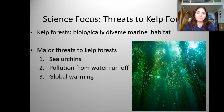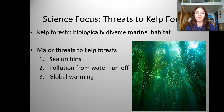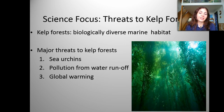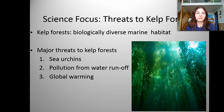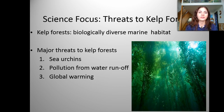Threats to kelp forests — these are biologically diverse marine habitats. Major threats to the kelp forests are sea urchins, pollution from water runoff, and global warming. This employs the term keystone species: the sea otter is a keystone species that helps control the growth of kelp forests by taking out the sea urchins that feed on and destroy those kelp forests.